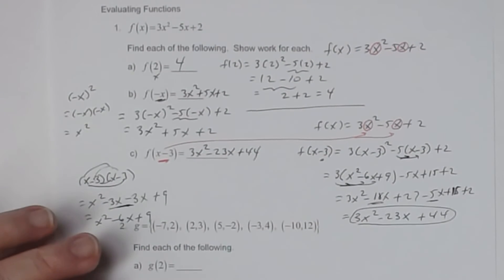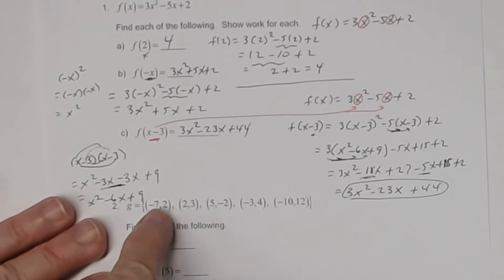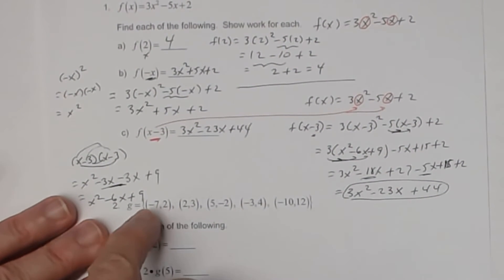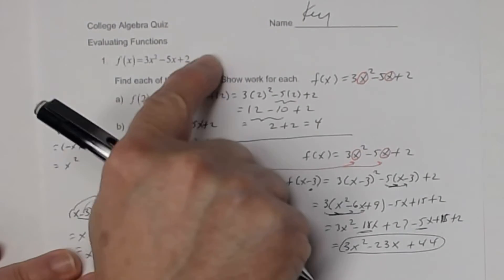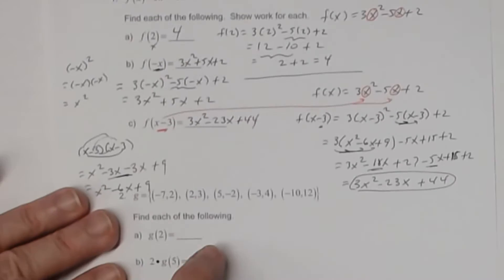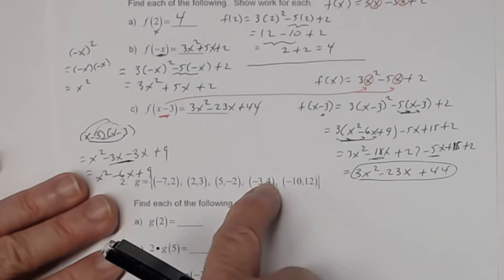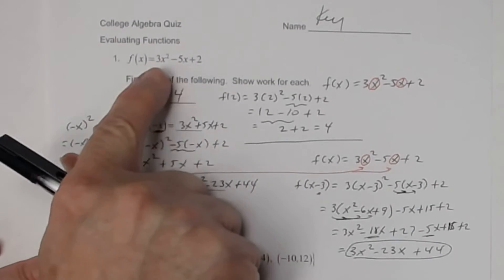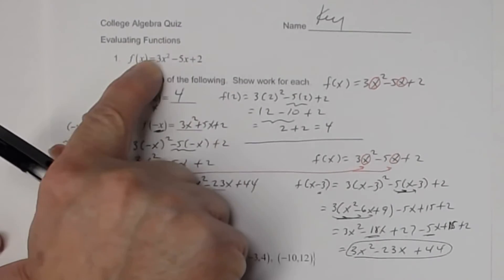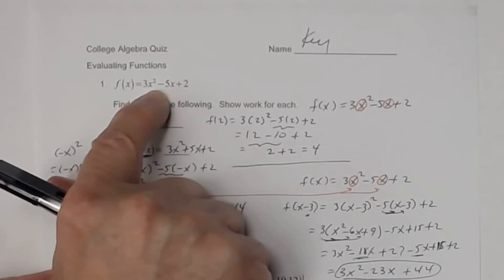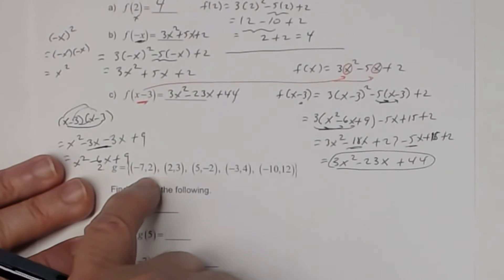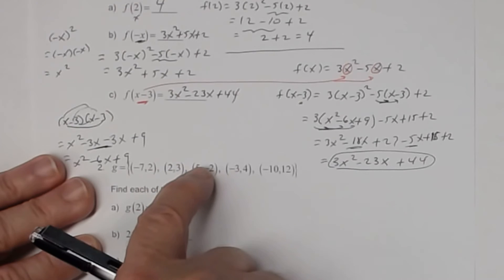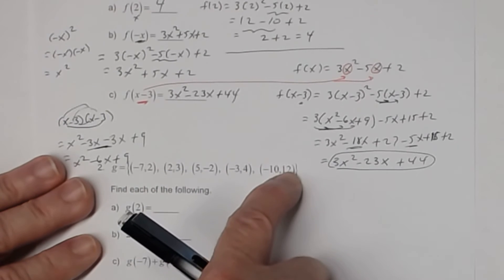So f of x minus 3 is equal to 3x squared minus 23x plus 44. Now, number 2 — you're given a function as a finite set of ordered pairs. Here your function was written as a variable expression. Over here it's written as a set of ordered pairs — a finite set. Whereas the variable expression represents an infinite set of ordered pairs. Over here you have a finite set: 1, 2, 3, 4, 5 — only 5 points.